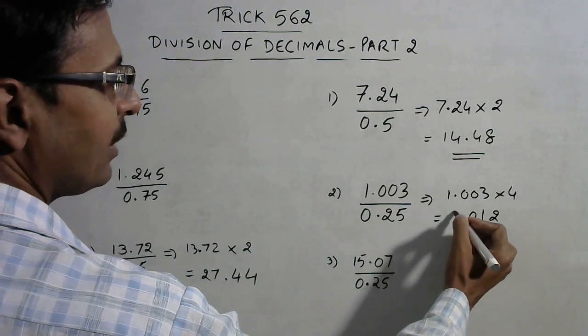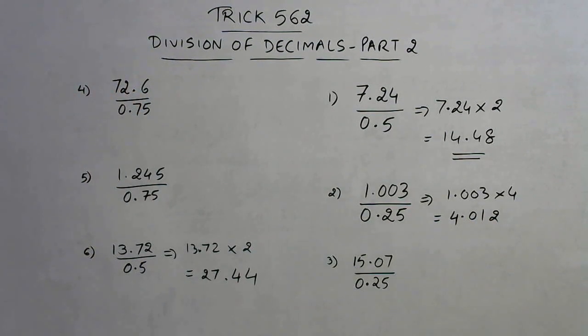So 4.012 is the answer for this question. Students, you need to calculate all these things mentally because they are questions of mental maths, not questions of written maths. So these rules will enable you to think over the questions of decimals in a proper way and get to the answer within 2 to 3 seconds time only.